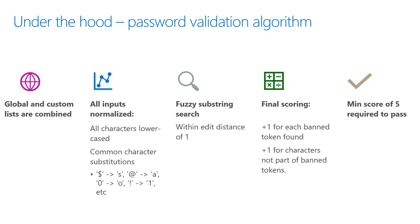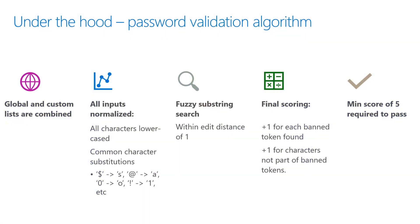Now let's dive deeper into the banned password algorithm and how password protection evaluates password strength. Banned passwords consists of the global banned password list — a list of common passwords defined by Microsoft — and the custom banned password list which your administrator configures. Before a password is evaluated, these two lists are combined into one large banned password list. Password protection is evaluated whenever a user goes to reset or change their password, and the banned password algorithm starts the evaluation by normalizing the password.